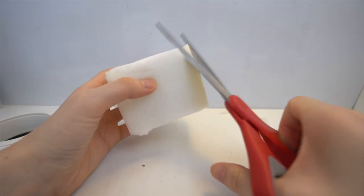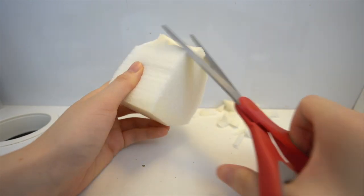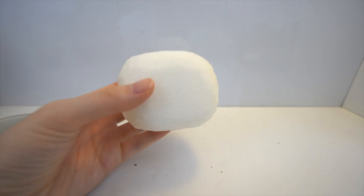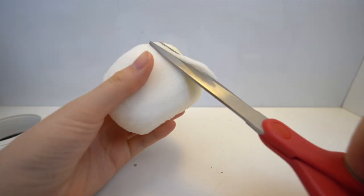First you want to cut your memory foam into a cube and that will make it easier for you to shape the foam into a ball. After you rounded your cube it should look something like this and then we're going to create dents.